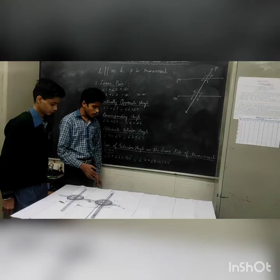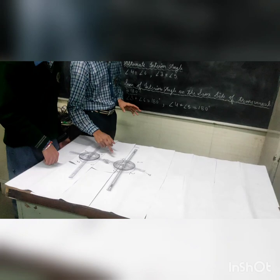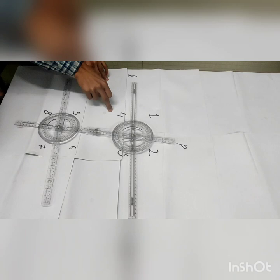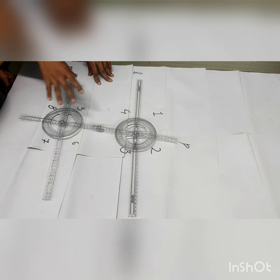The fourth point is the alternate interior angle. Here we can see in the model that angles 4 and 6 are on opposite sides. The alternate interior angle pairs are 4 and 6, and 3 and 5. These two pairs are equal — angle 4 equals angle 6, and angle 3 equals angle 5 — when lines L and M are parallel.